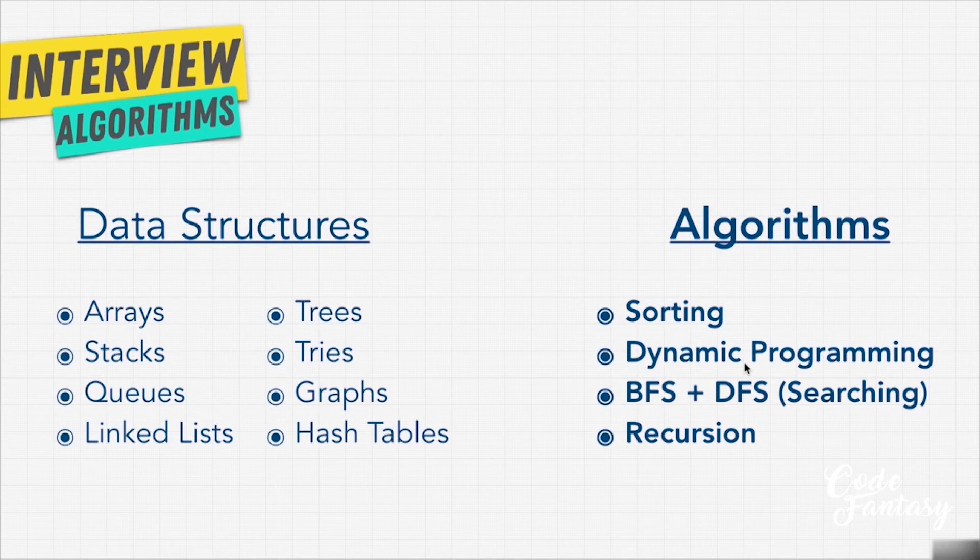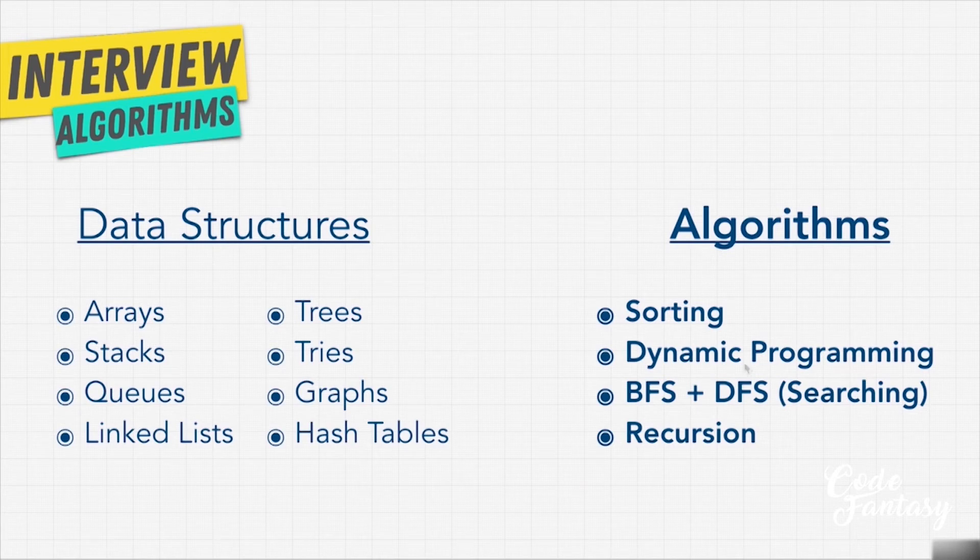Remember our Big O cheat sheet and how we haven't really talked about O(log n) and O(n log n)—maybe a little bit in the previous videos? Certain algorithms allow us to simplify our Big O complexity into smaller or better time complexity. So by using the right algorithm, I could take a function down to something like O(n log n), or something that has linear time complexity down to O(log n).